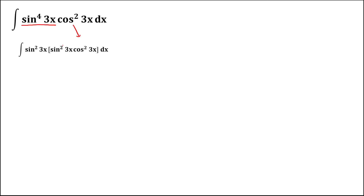We put the exponent outside, so this becomes the integral of sine squared 3x times sine 3x times cosine 3x, to the power 2, times dx. Then we use the trigonometric identity for sine 3x times cosine 3x.